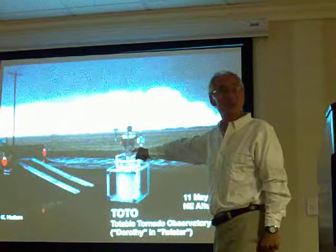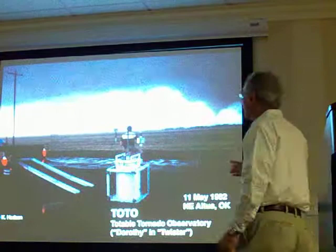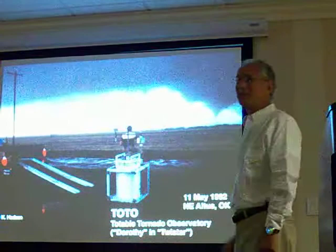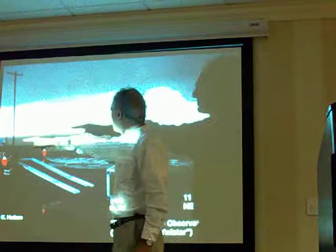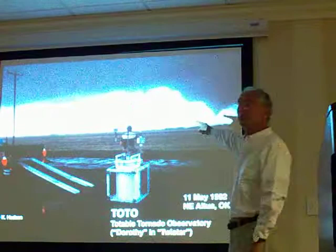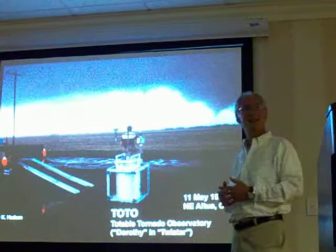Here is a picture of a major tornado going over Altus Air Force Base, moving from southwest to northeast. We placed TOTO out hoping the tornado would come over it. The big tornado moved to the northeast and dissipated. A new one formed to the west, so we moved north expecting it to come toward us — but this tornado moved to the northwest instead.